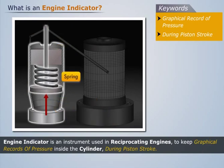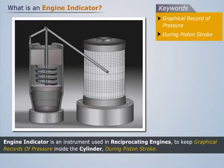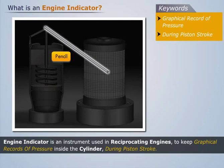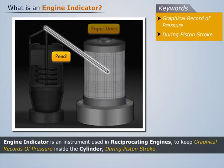To directly measure the gas pressure, the displacement is recorded by a pencil on a paper, which is wrapped on a drum.